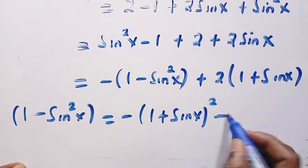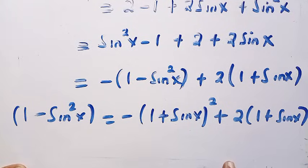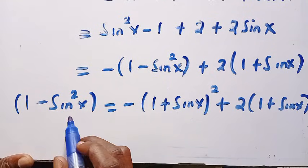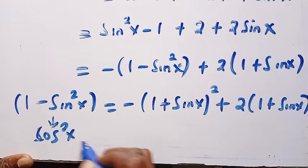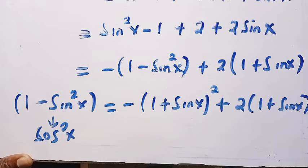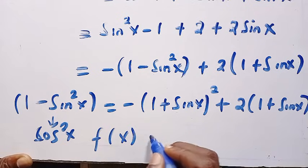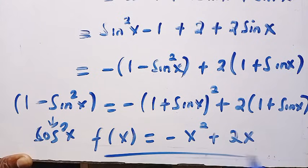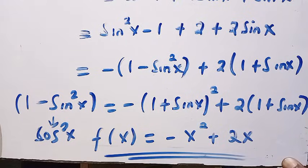Here is 2(1 + sin x). If we consider what we have above, we can change 1 minus sin²x, which is the other side, everything equivalent to cos²x. We will be changing all this to x. Therefore, the function is the same thing, which is f(x) equals minus x² plus 2x. Different methods, same question, and the same answer.